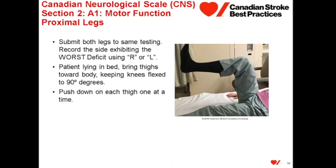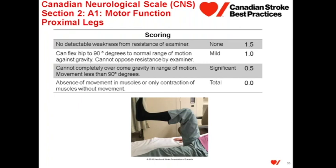We then move on to proximal legs. With the patient lying in bed, we bring their hips toward the body one at a time, keeping the knees flexed to 90 degrees. If the patient is able to bring their thigh up to 90, we then press down on one thigh at a time. After assessing one leg, we move to assess the other. The scoring is the same as it is with the arms.